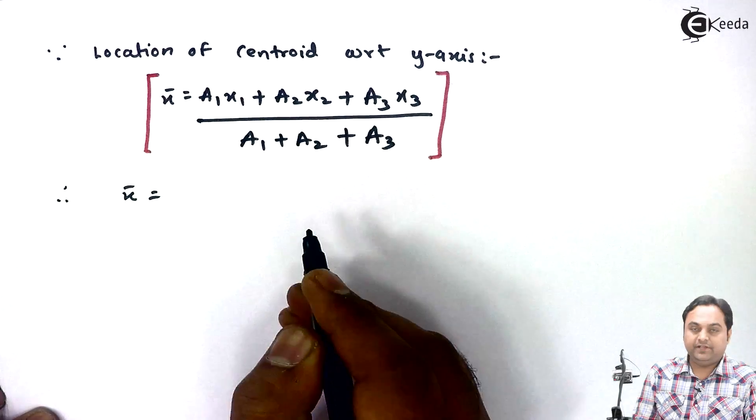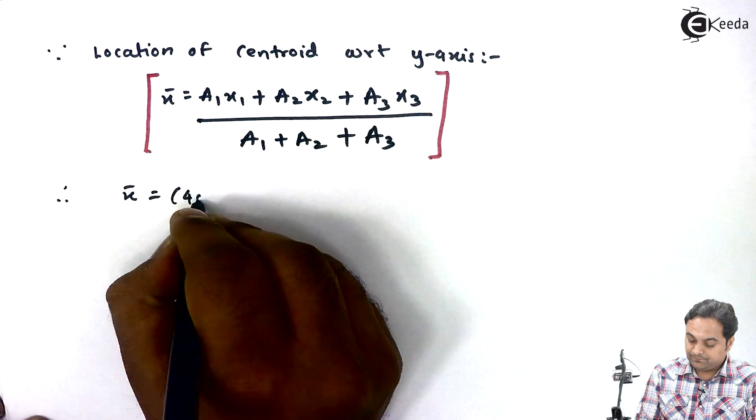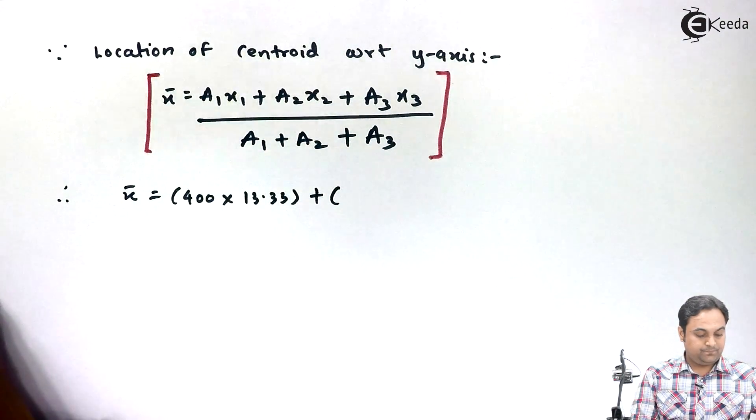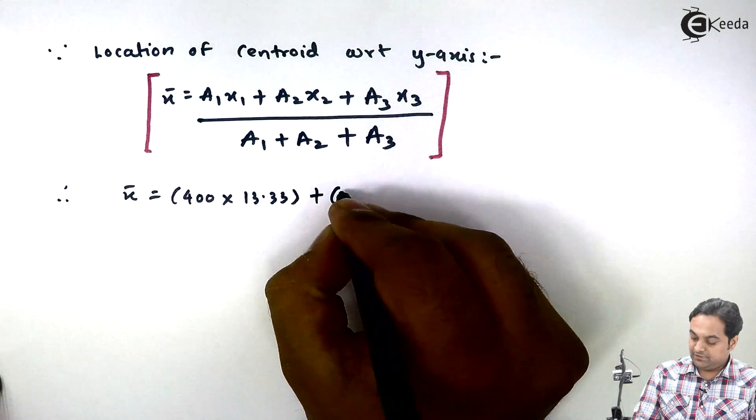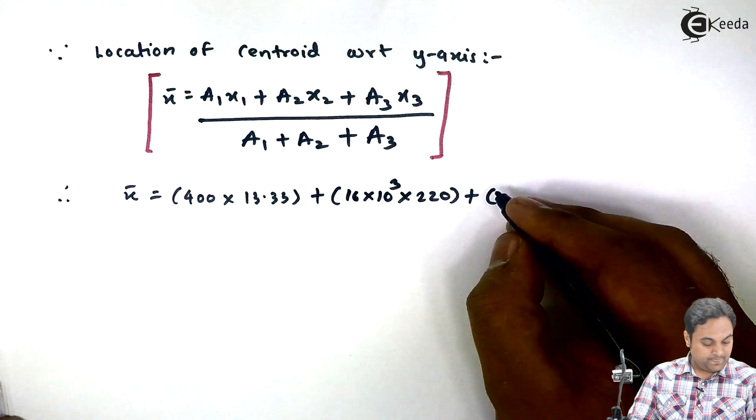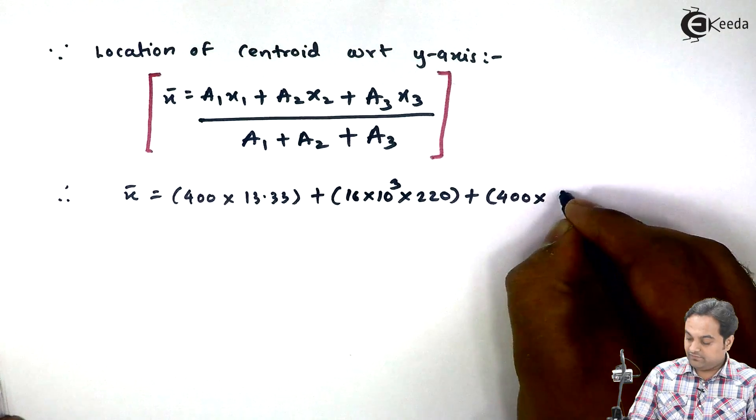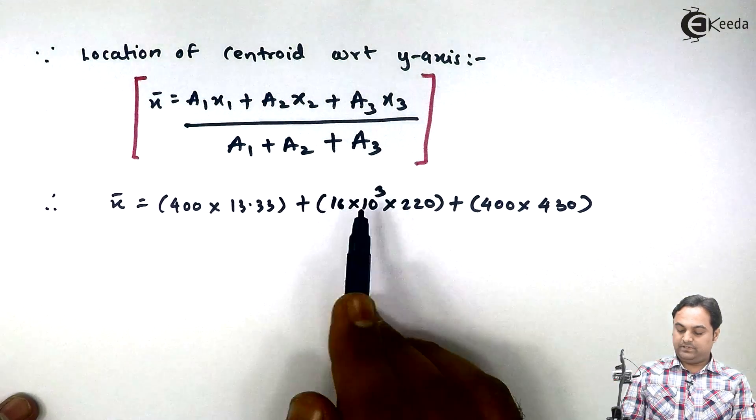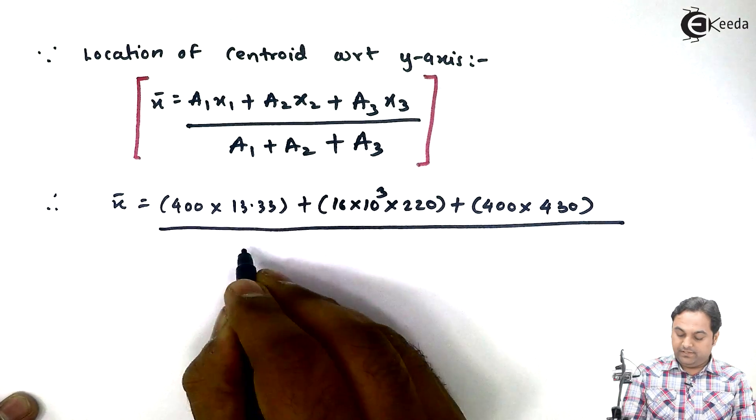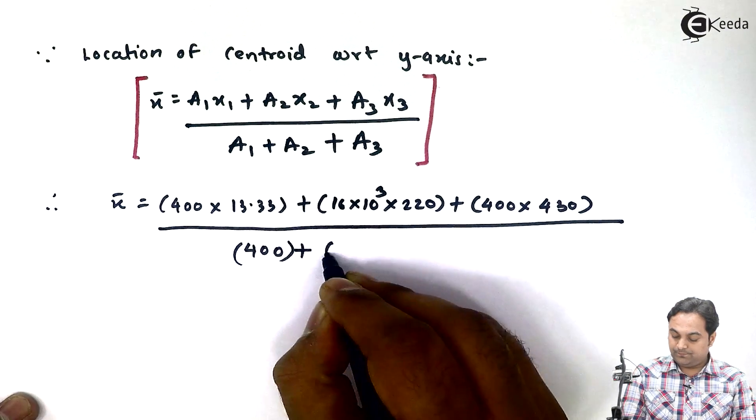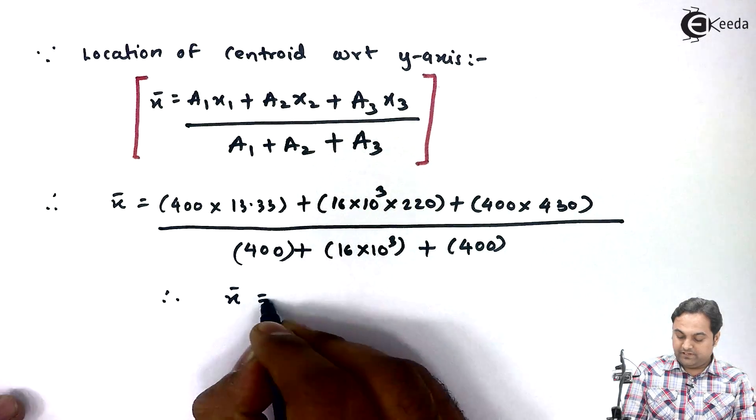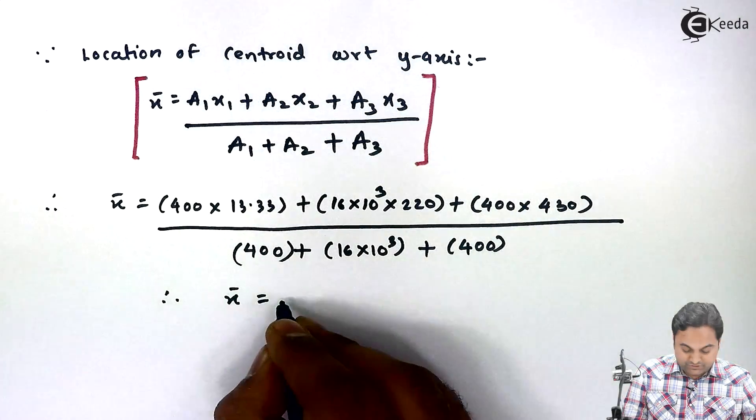Therefore x bar will be equal to area 1, that is 400 into x1 is 13.33, plus area 2, 16 into 10 raise to 3 into x2, 220, plus area 3, that is 400 into x3 which is 430. So here I have a1x1 plus a2x2 plus a3x3 divided by area 1 plus area 2 plus area 3. So therefore x bar value will be 220.08 mm.